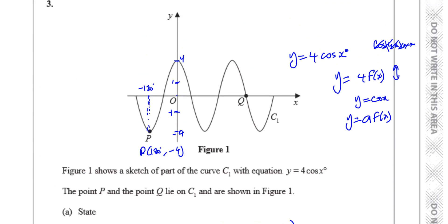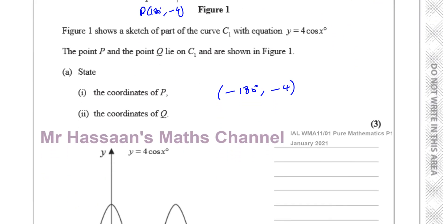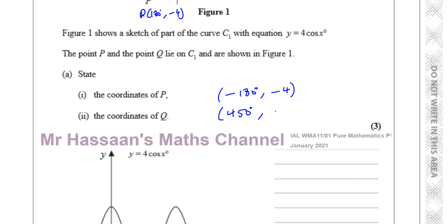Now Q is the place where this curve — going 0, 90, 180, 270, 360 — is basically 90 more than 360, so that's 450 degrees. The x values don't change in this transformation, just the y values change. If you multiply 0 by 4, it stays at 0. So Q is going to be 450 degrees and 0. That's the answer to part A.